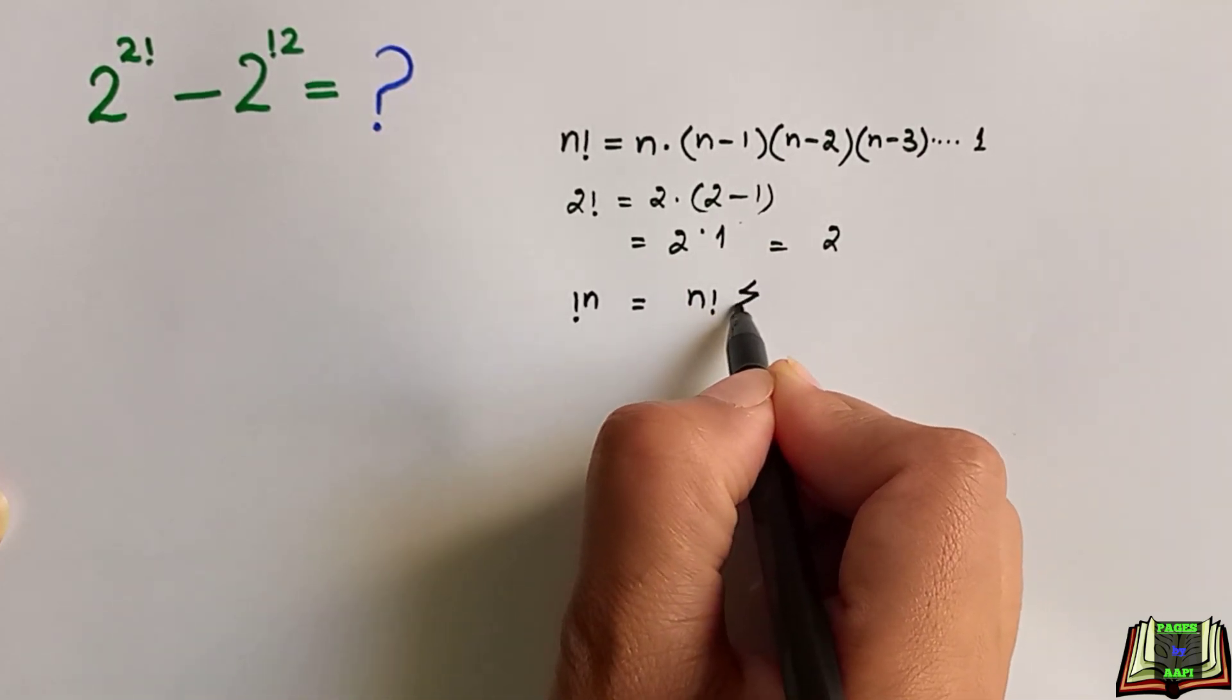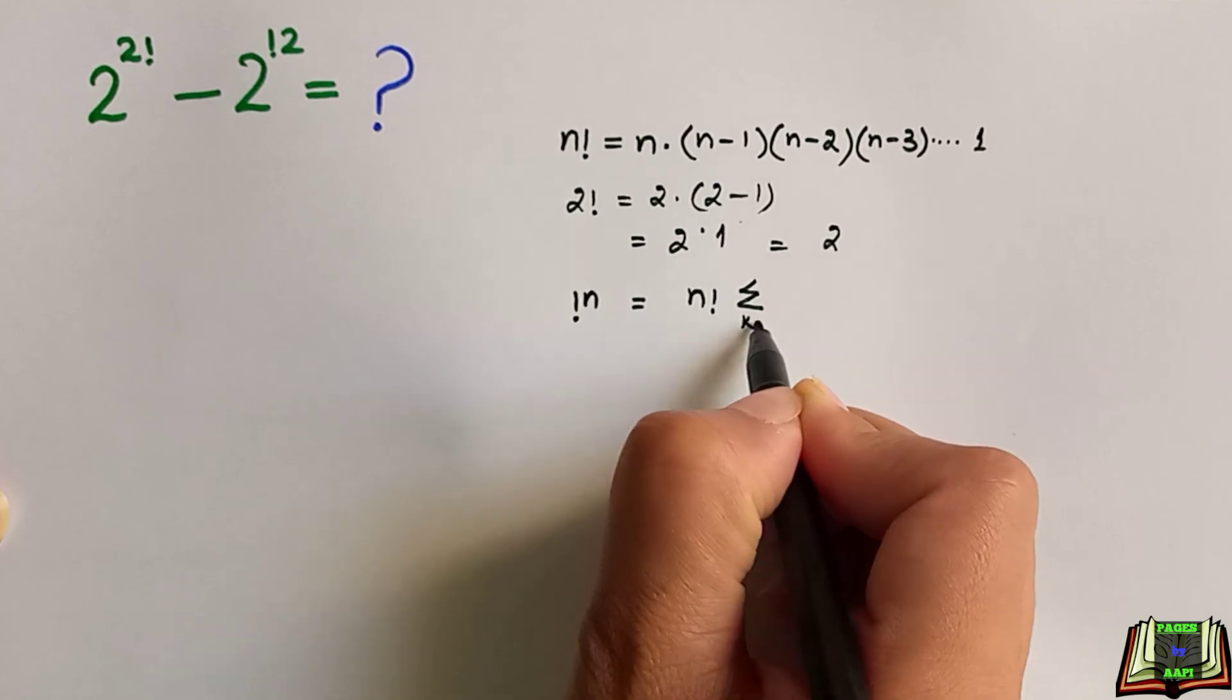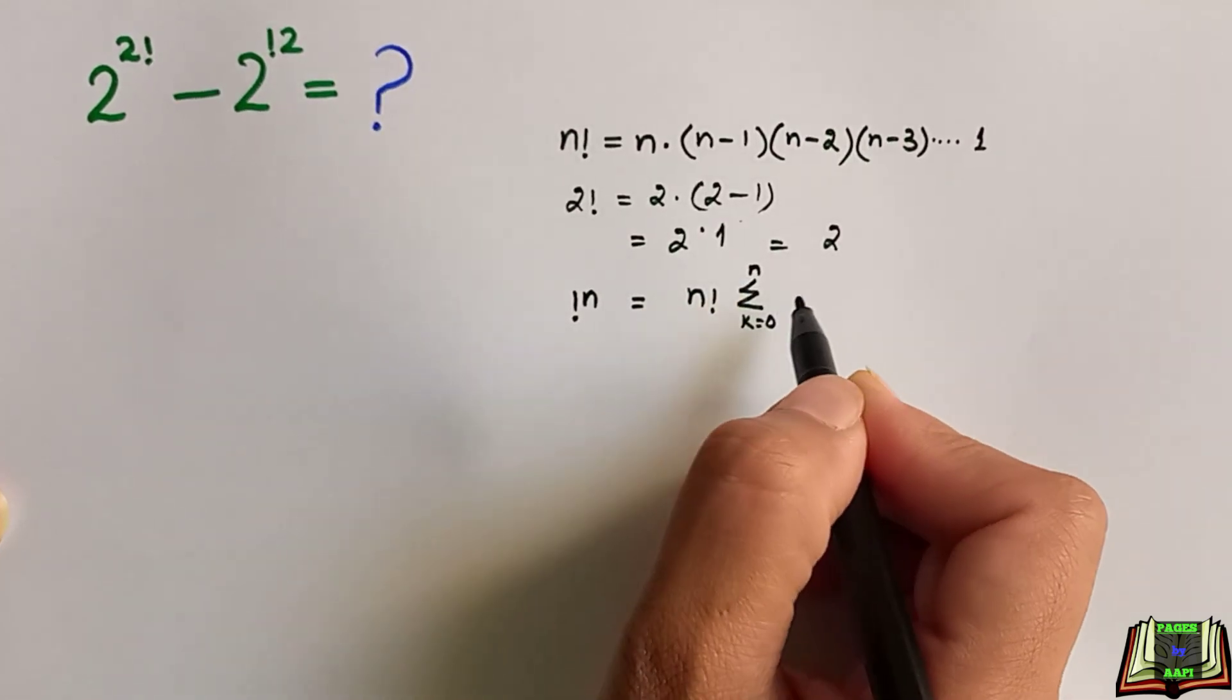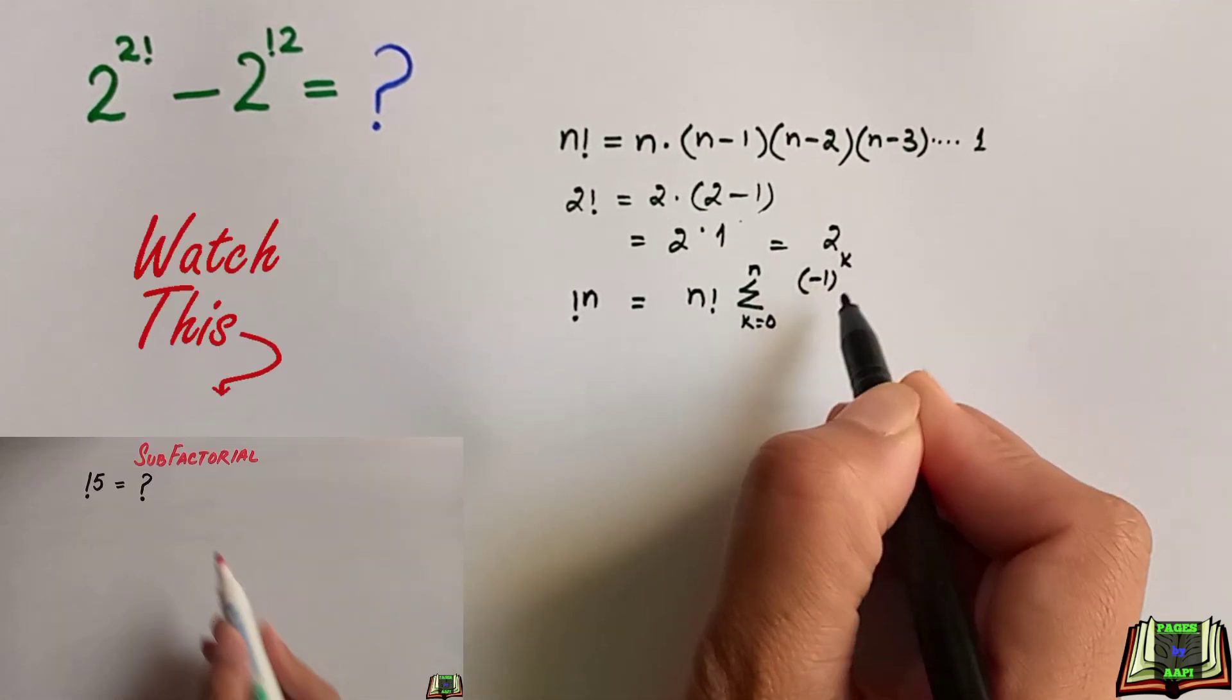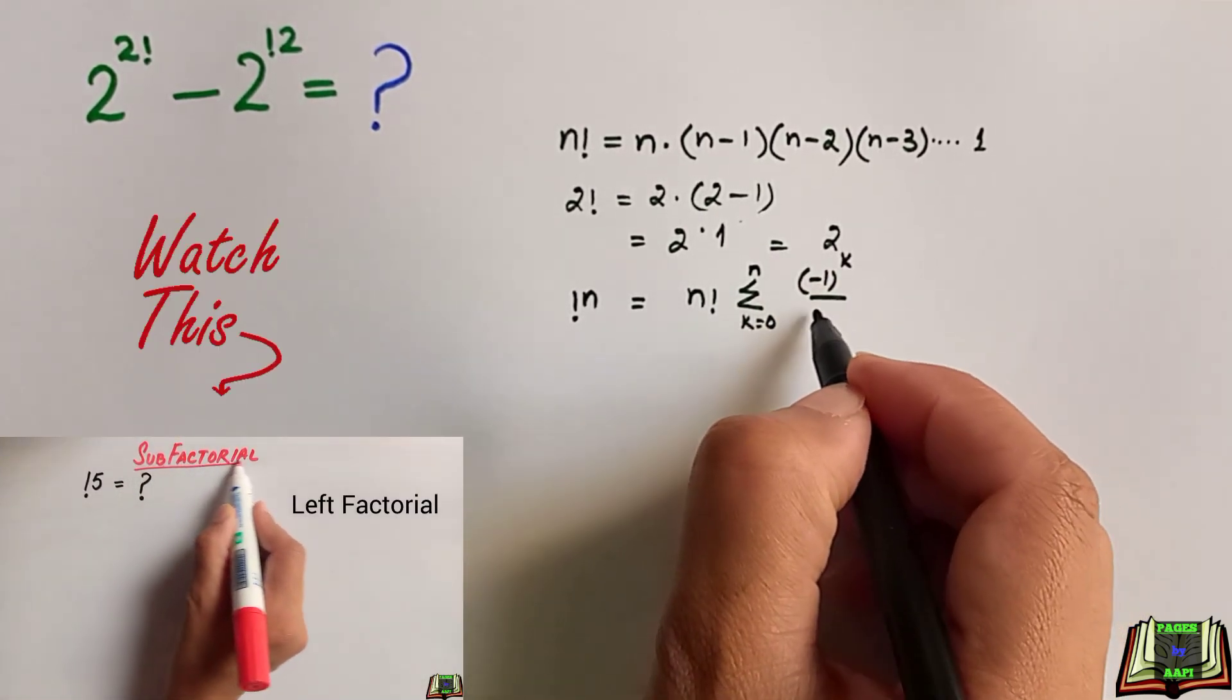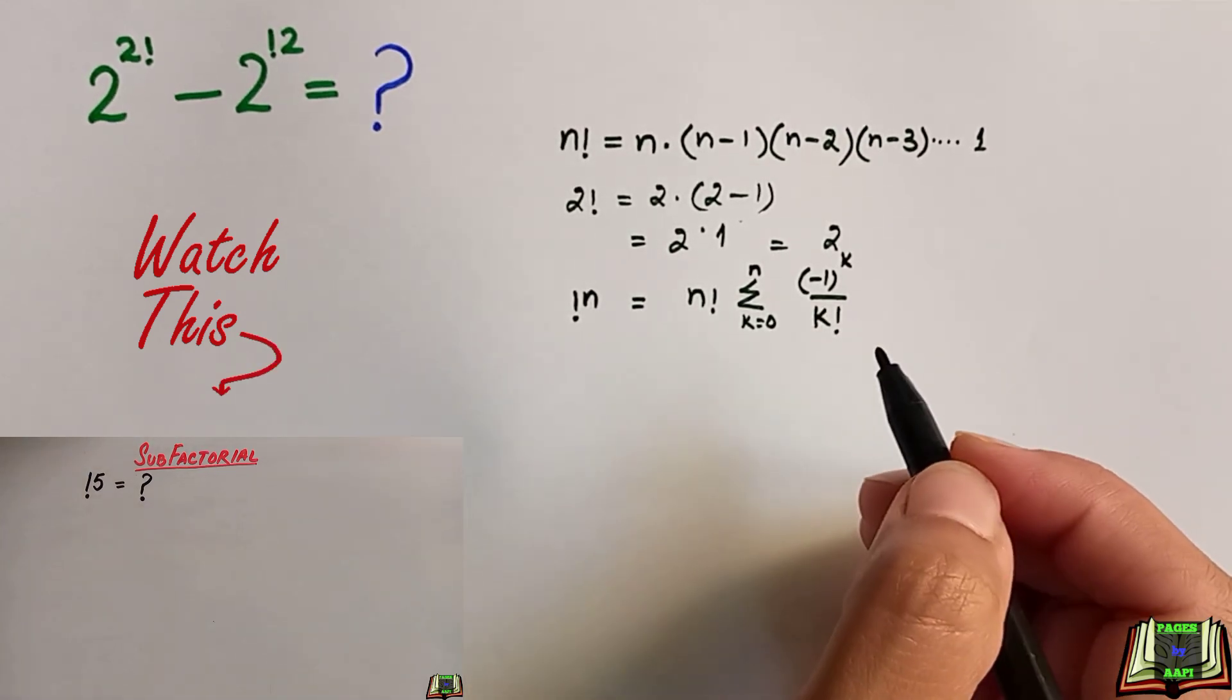Subfactorial of n equals n factorial times sigma, k goes from 0 to n, of (-1)^k over k factorial. We have already seen this formula in detail. If you have not seen that video, go and check it out.